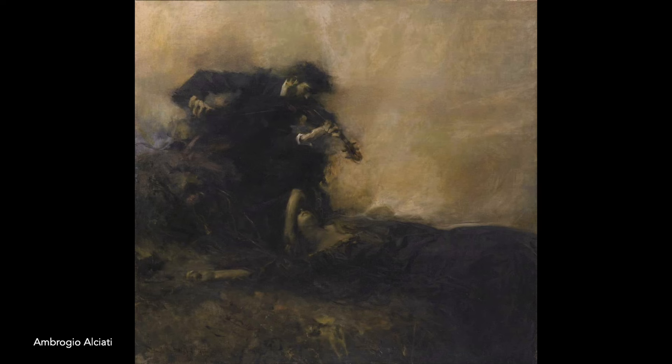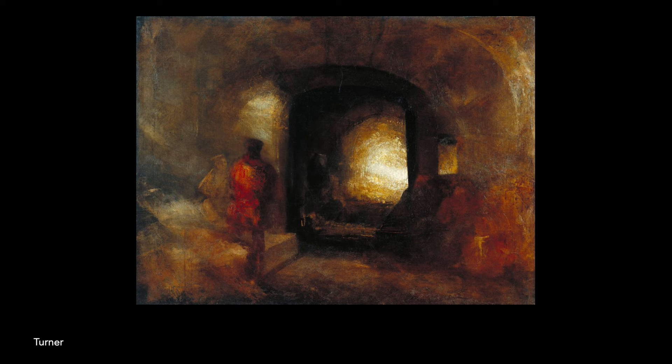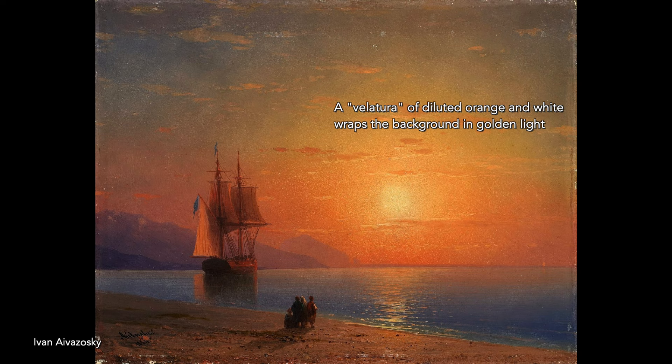Cinematographers use filters to affect color and space. Painters can use color mixing, brush strokes, and thin washes of paint applied on top of previous layers.